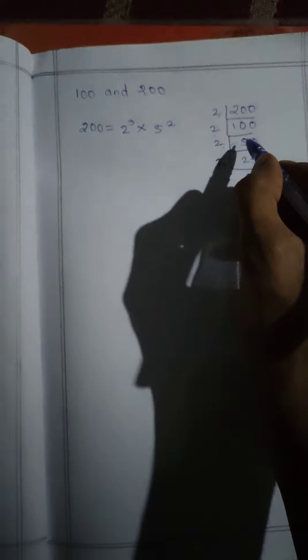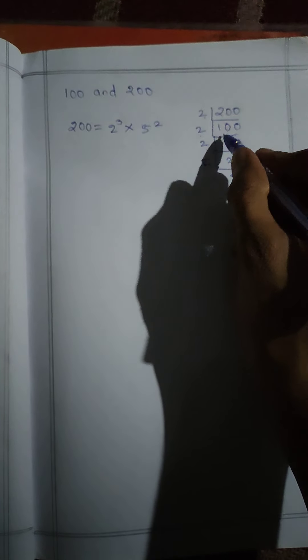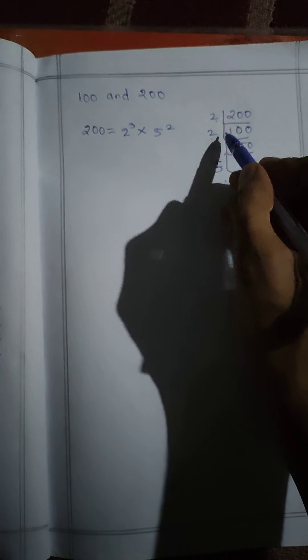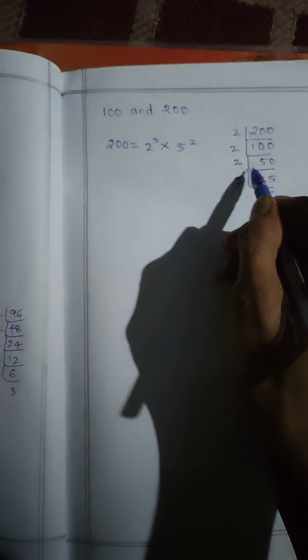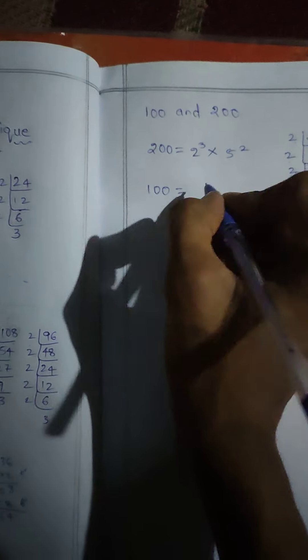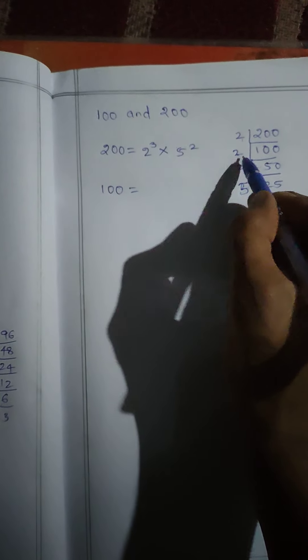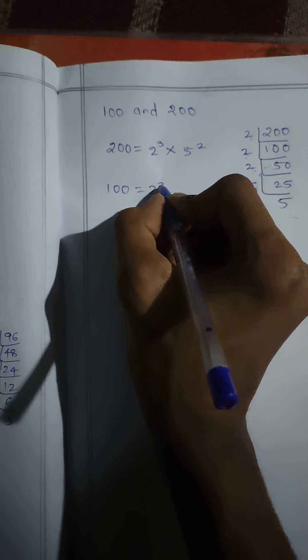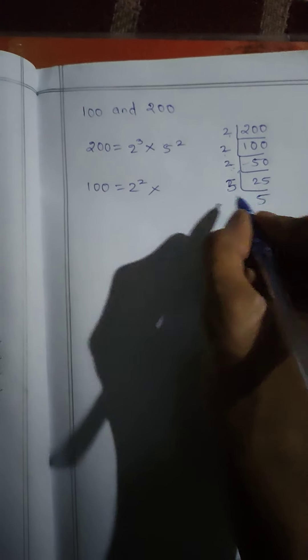We don't want to take 100 because 100 is there here. Prime factorization of 100: 100 equals 2 squared into 5 squared.